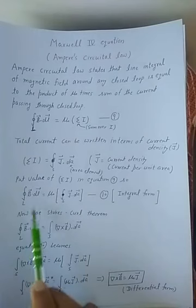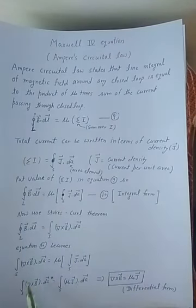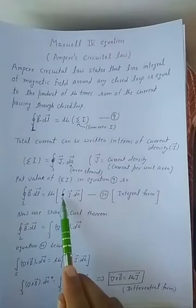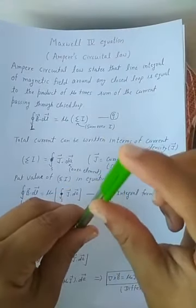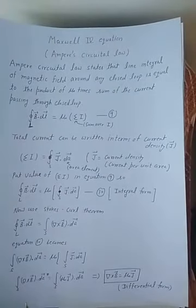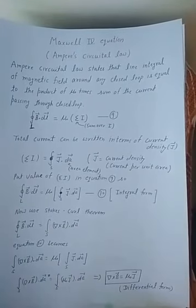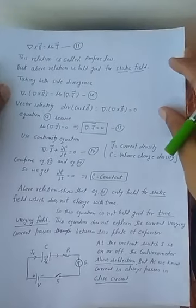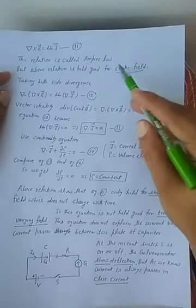We convert the line integral into a surface integral. The left-hand side of equation number 10 is replaced by the surface integral term, giving: surface integral of del cross B dot dA equal to mu-naught times the surface integral of J. Since both sides are surface integrals, we write del cross B equal to mu-naught J. This is called the differential form, and this relation is called Ampere's law.